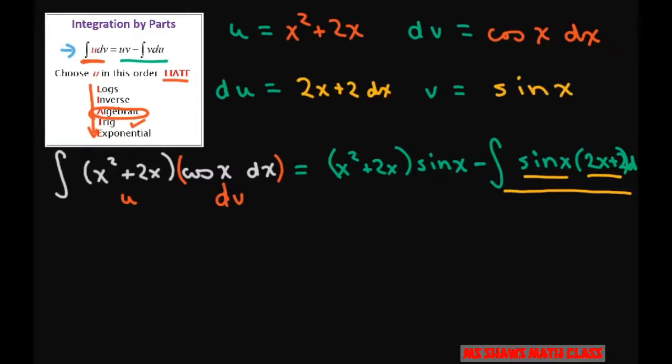So again, we're going to set up u and dv. Let u be the algebraic part, which is 2x plus 2, and dv is everything else, which is sine x dx.